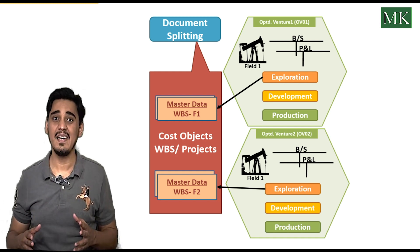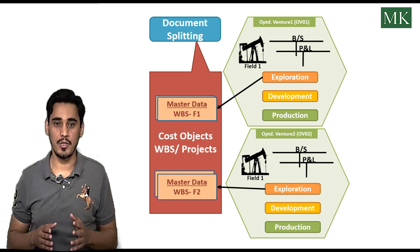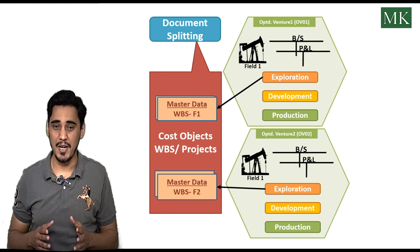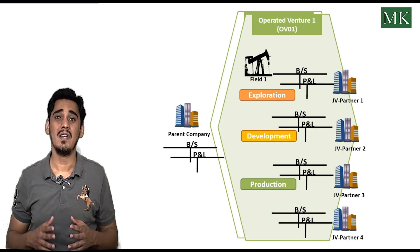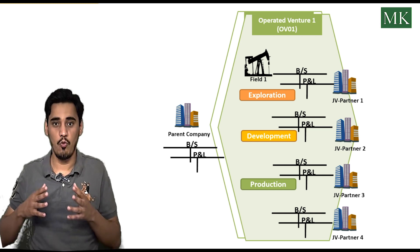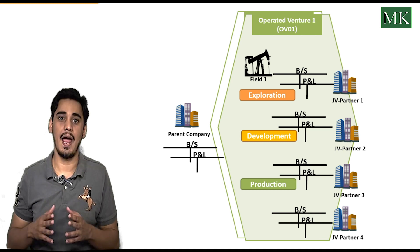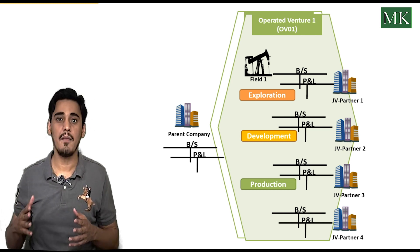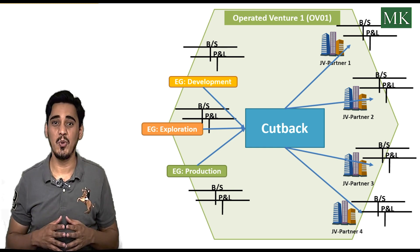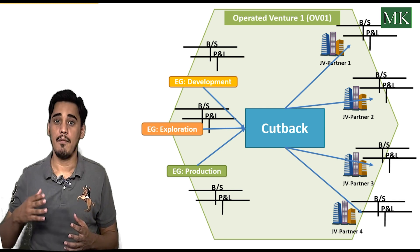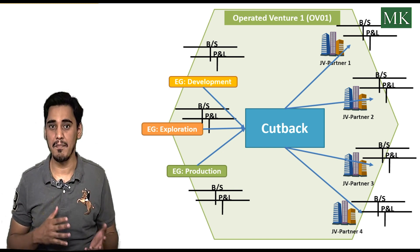We assign the equity type and the joint venture in that cost object master data, so that all line items posted in the accounting document are split with the joint venture and the equity type. The operator or parent company then further breaks the financial statement at the joint venture partner level according to equity share and distributes it to the joint venture partners periodically. For this, we execute the cutback transaction periodically, which splits financials at the joint venture partner level according to equity shares maintained in the equity groups.